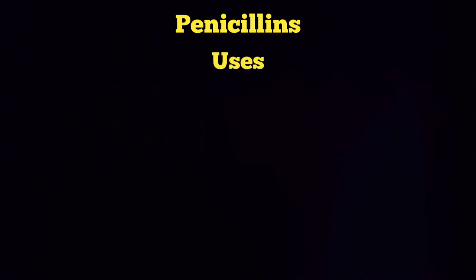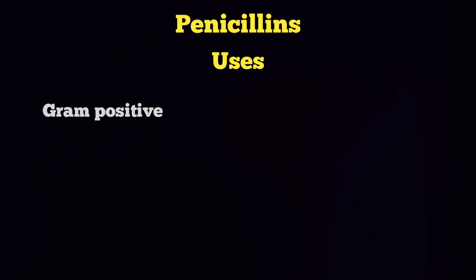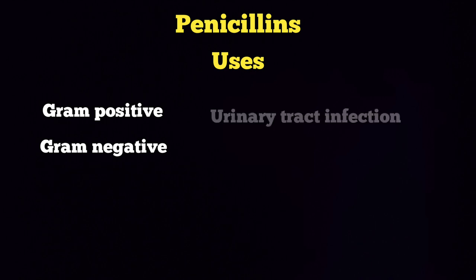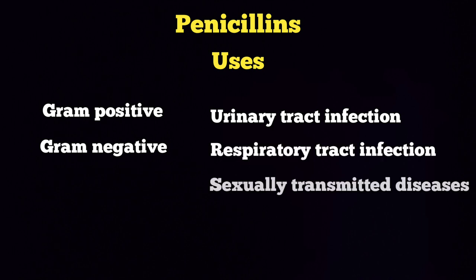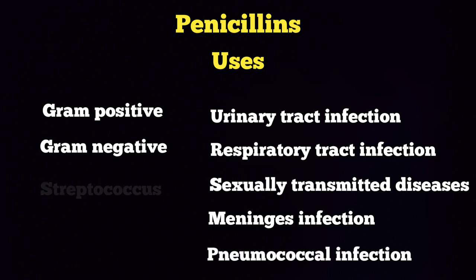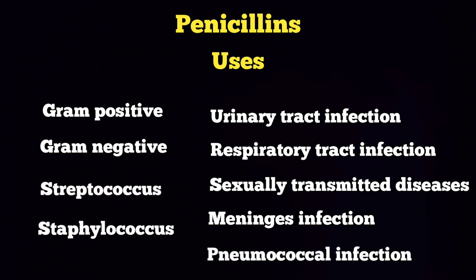Uses of penicillin: penicillin is used against a large category of infections, including gram-positive as well as gram-negative organisms. It is mostly used for bacterial infections and is useless for viral infections. Examples include urinary tract infection, respiratory tract infection, STD, meningitis, pneumococcal, streptococcal, and staphylococcal infections. Penicillin is a very useful drug for many infections.